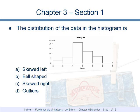The distribution of the data in the histogram is skewed left, bell-shaped, skewed right, or has outliers. It is not a perfect example, but the distribution is a bell-shaped example, or bell-shaped curve.